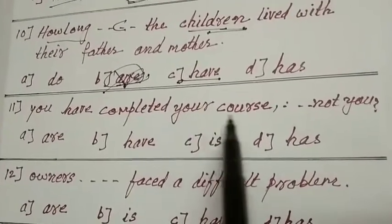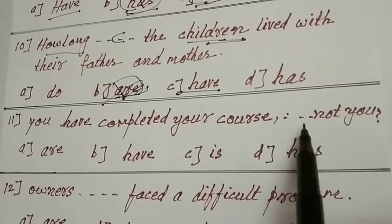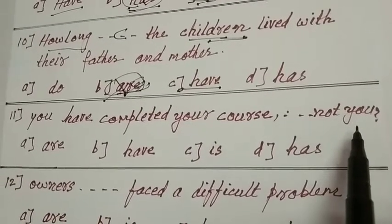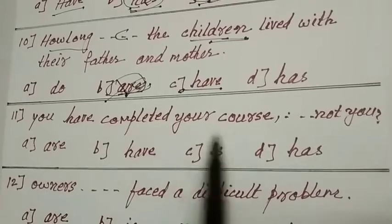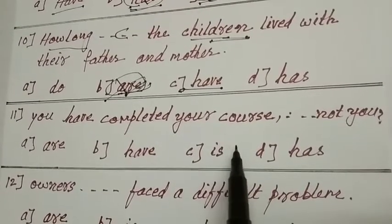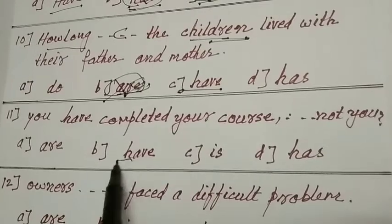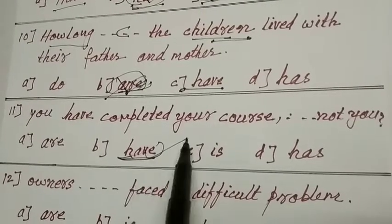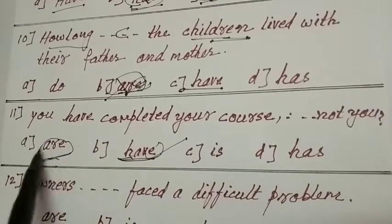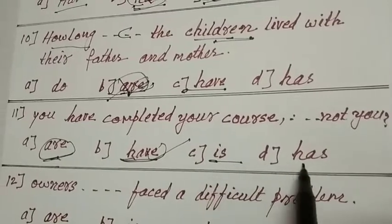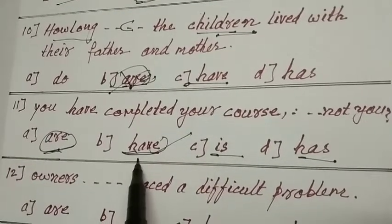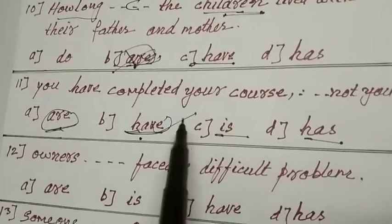You have completed your course, dash. You have completed your course. You have completed your course. Have not you? Have not you is your answer. Are not you does not come. Is does not come. Has been does not come. Have not you. This is the question tag.